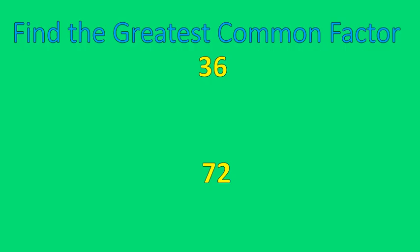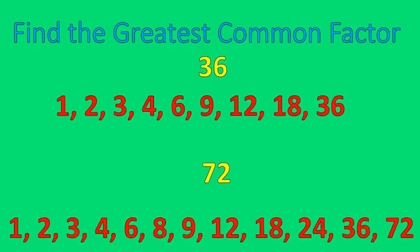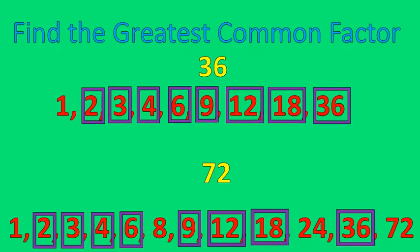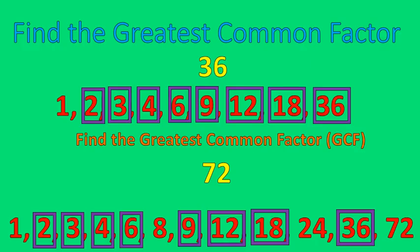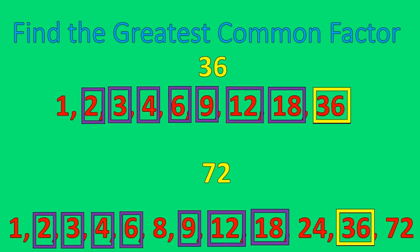Let's do one more — find the greatest common factor between 36 and 72. This one might take a long time because there are a lot of factors. After listing the factors, the common factors are 2, 3, 4, 6, 9, 12, 18, and 36. The greatest common factor is 36. This happens when one number is a factor of the other — it's kind of rare but it definitely helps in cases when we actually use greatest common factors.